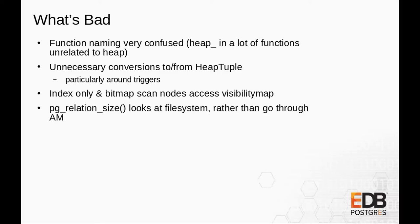One problem is that index-only scans and bitmap scans currently have visibility map accesses directly in them, which isn't great. We didn't get around to abstracting those callbacks. You can return false and just not create the visibility map — behavior will be correct, just a bit slower. Also, pg_relation_size doesn't go through any of our new abstractions. It just goes to the file system, does a stat on each relation segment, and sums it up. That's pretty broken even before this work, and even more broken after — you could write a heap AM variant that uses different file chunking and it would fail. We have the ability in the table AM to get the table size; we just need to change these functions.